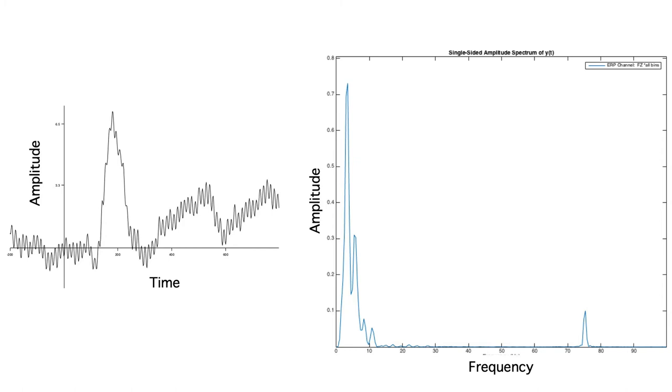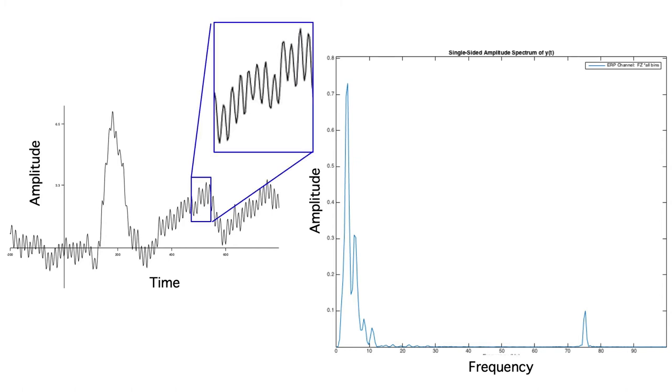Here's another example of an ERP waveform and its Fourier transform. This time, you can see a high frequency oscillation in the ERP waveform, and you can see a peak at 75 Hz in the Fourier transform. This experiment was run using an old-fashioned CRT monitor with a refresh rate of 75 Hz, and it created a 75 Hz noise oscillation in the ERPs.